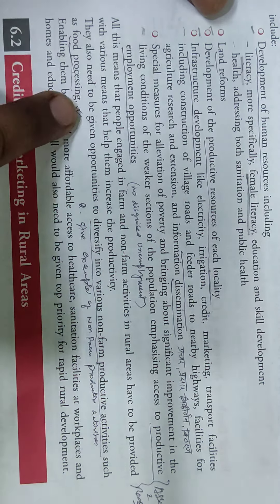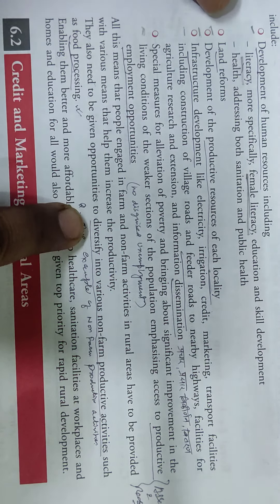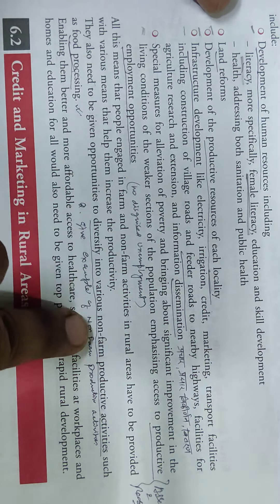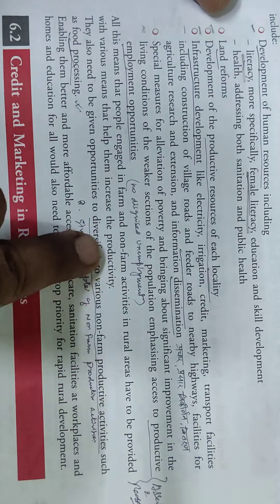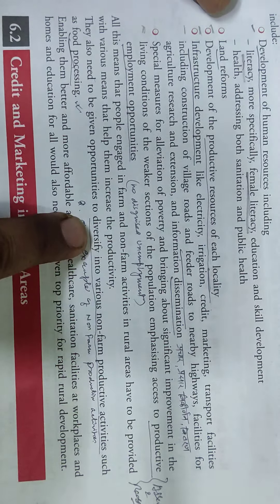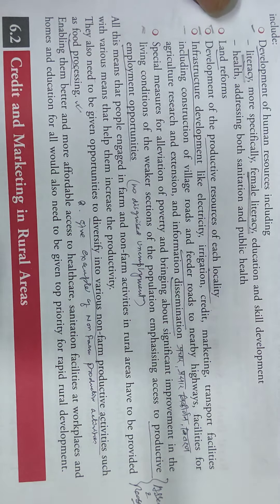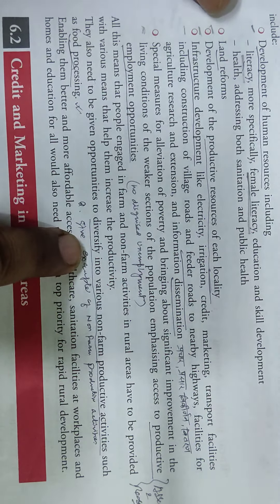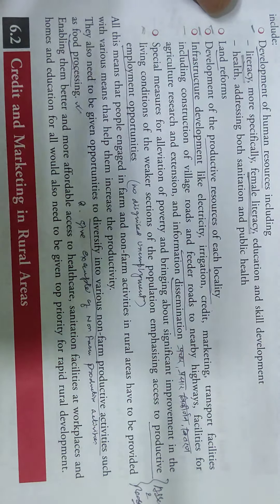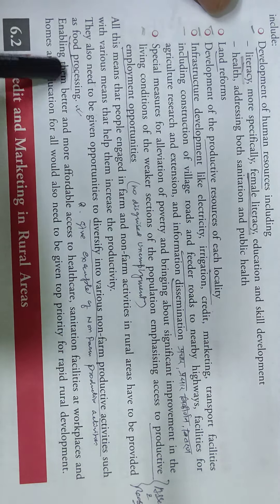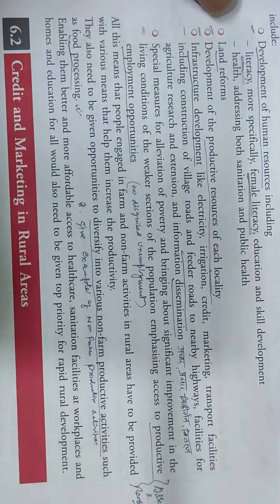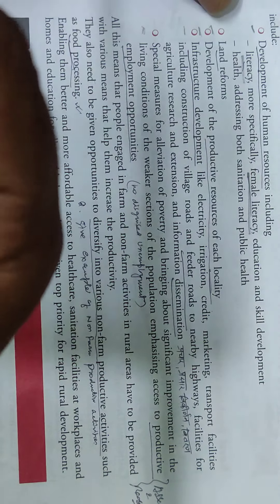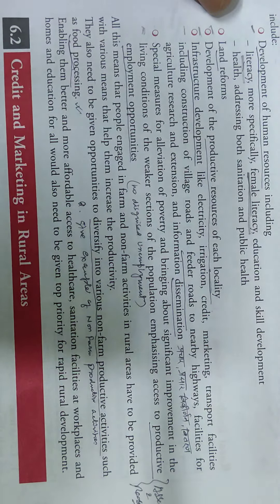People also need to be given opportunities to diversify into various non-farm productive activities. The more diversification there is, the more employment opportunities will grow. For example, food processing — if a tomato is grown traditionally in agriculture, it can be turned into tomato ketchup or pickle. Similarly, mango can become mango pickle or jam. These kinds of agro-processing industries add value.